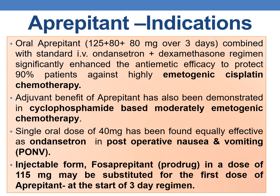Adjuvant benefit of aprepitant has also been demonstrated in cyclophosphamide-based moderately emetogenic chemotherapy. Additionally, a single oral dose of 40 mg has been found equally effective as ondansetron in post-operative nausea and vomiting. The parenteral form, fosaprepitant, is a prodrug and at a dose of 115 mg may be substituted for the first dose of aprepitant at the start of the 3-day regimen.